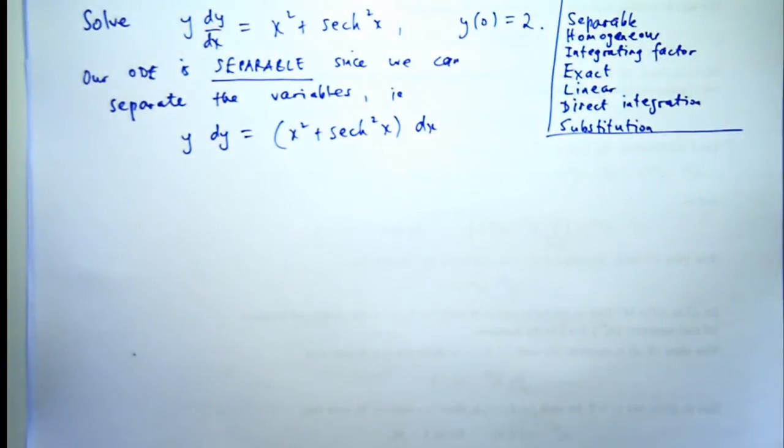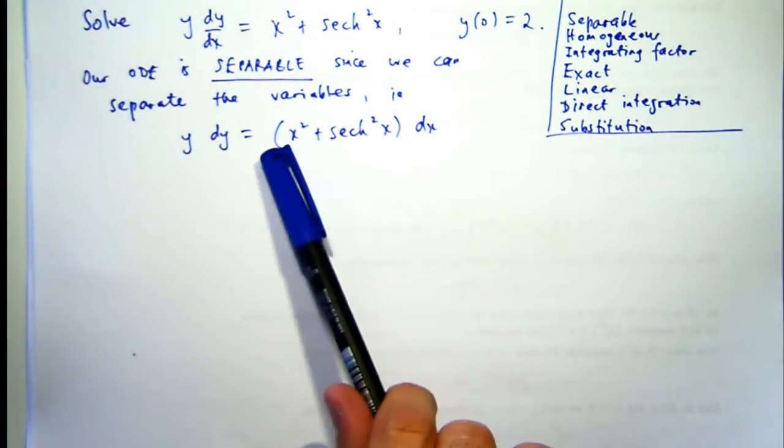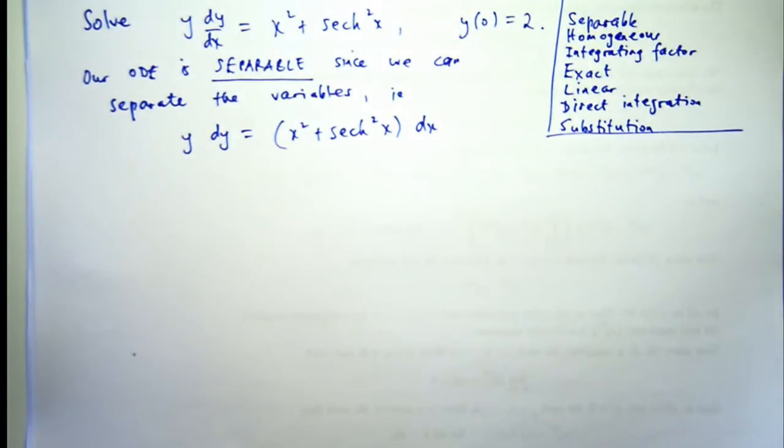Okay, so I've separated the variables now. I've got all the ys and the dys on one side, all the xs and the dxs on the other. And what I can do is just integrate both sides.